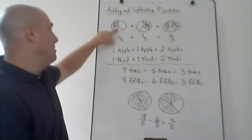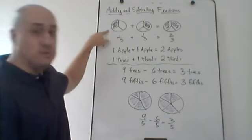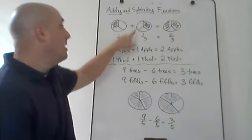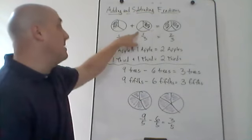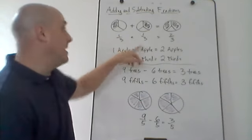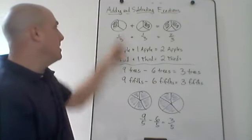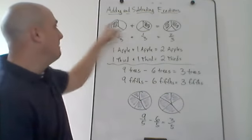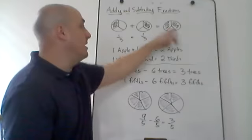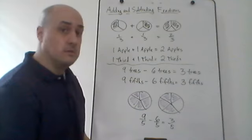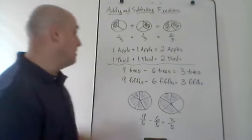Here we have a circle cut into three pieces — one of those pieces is shaded, so that's one-third. Here we have another circle cut into three pieces, one of those is shaded, so that's plus another one-third. If we add those together, we have two of three pieces shaded and we get two-thirds. So one-third plus one-third equals two-thirds.